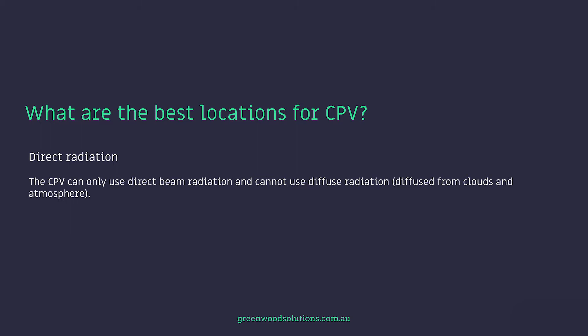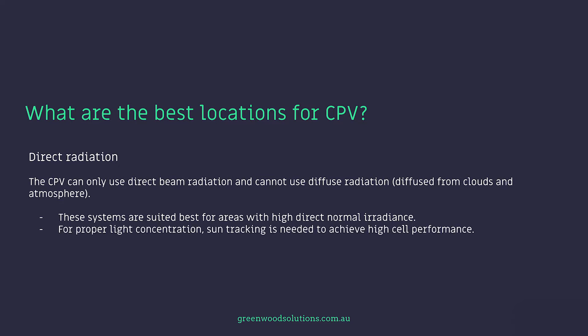CPV can only use direct beam radiation and cannot use diffuse radiation — in other words, diffuse light from clouds and the atmosphere. So these systems are really suited for areas with high direct normal irradiance. Think deserts. For proper light concentration, sun tracking is required to achieve high cell performance, and tracking is especially critical for high concentration systems. Unlike standard photovoltaics, concentrated PV can't be used in situations where the light is diffused.